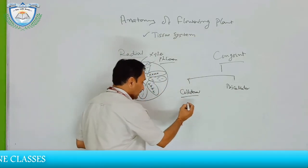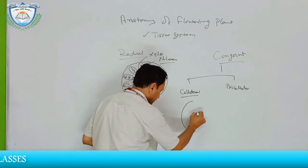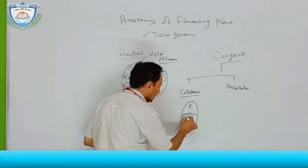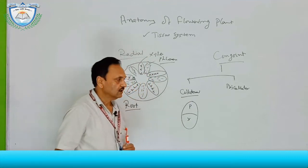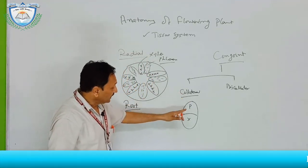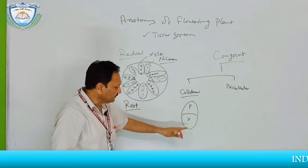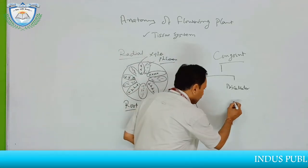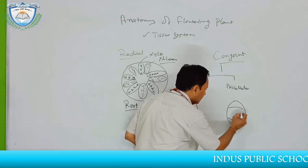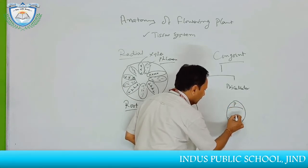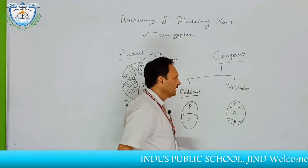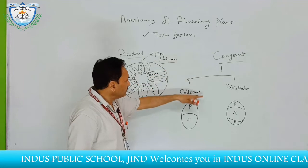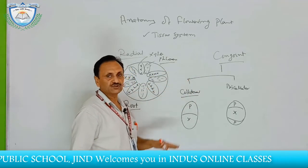In the collateral type, the xylem and phloem are arranged such that phloem is towards the outer radius and xylem is towards the center. If phloem is present on both sides — here is phloem, here is phloem, and this one is the xylem — then this is called bi-collateral. This is one of the types of classification of the conjoined vascular bundle.